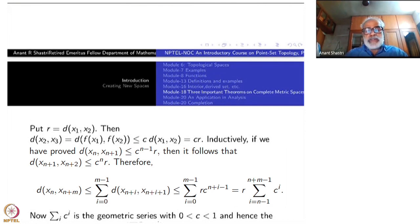So distance between x_n and x_{n+m} is less than or equal to sum from i=0 to m-1 of distance between x_{n+i} and x_{n+i+1}. I use triangle inequality and then I get this summation. But each of them is r times c^{n+i}. 0 to m minus 1. So you can rewrite it as r will come out, sum from i=n to n+m of c^i. It starts with i equal to n. This is just rewriting this.